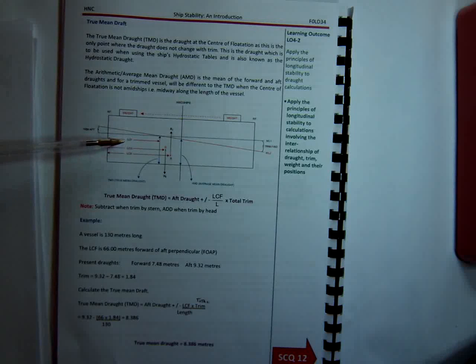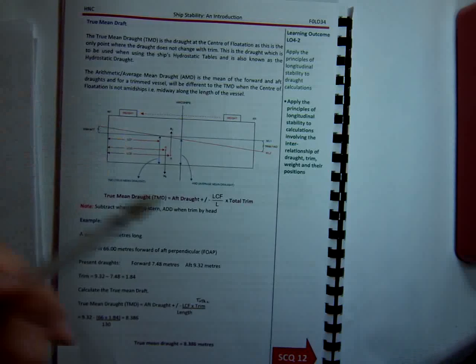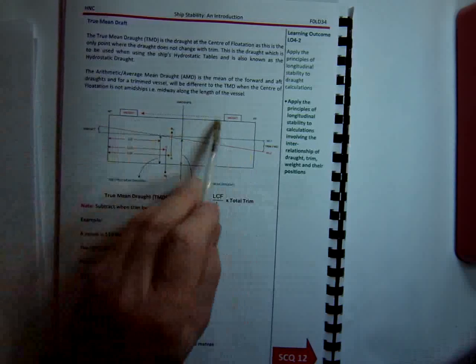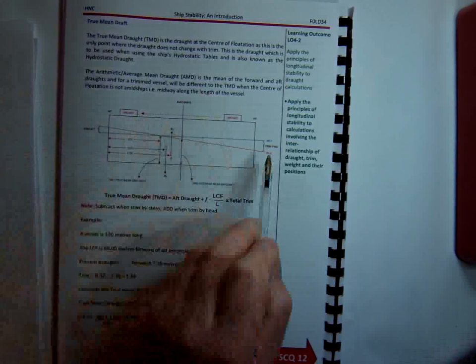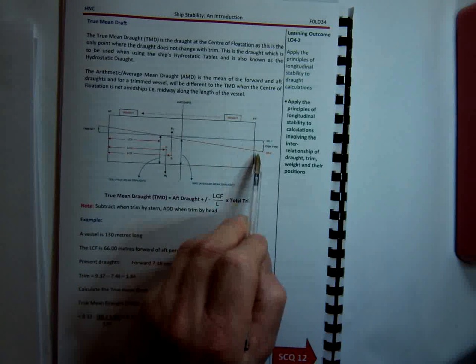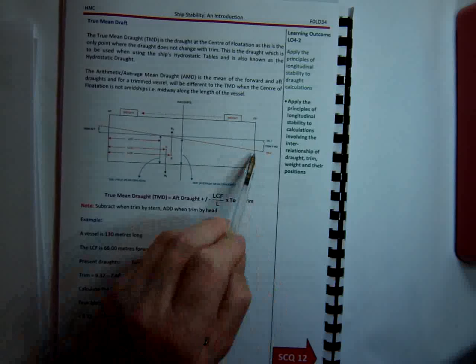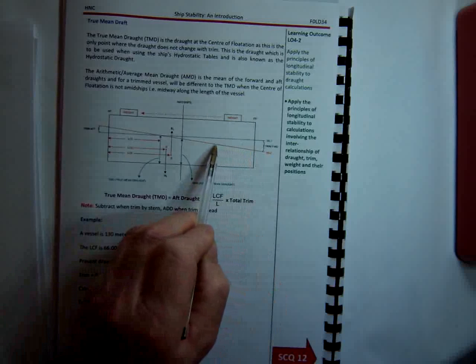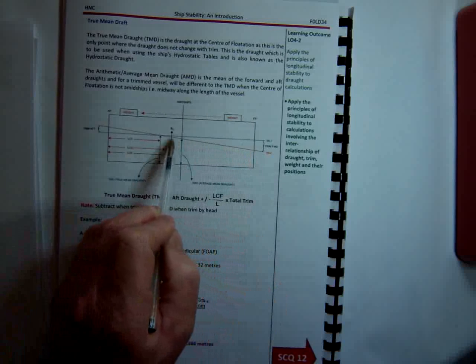And it's the only point about which the draft doesn't change. So if we look at this drawing here, what's happening is the weight has been moved and therefore the initial water line has changed. And you can see that going along this new water line, the draft is changing all the time.